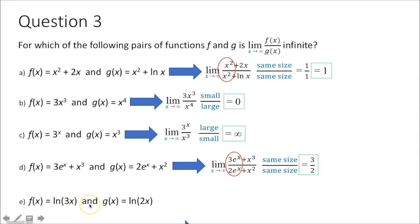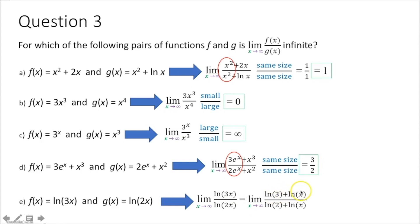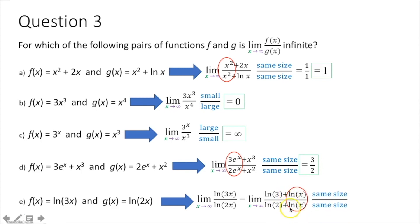For part e, remember your properties of logs. ln of 3x expands to ln 3 plus ln x, and ln of 2x expands to ln 2 plus ln x. The constants ln 3 and ln 2 don't matter as x approaches infinity — what remains is ln x over ln x, giving coefficients 1 over 1, so the limit equals 1. The answer is choice c.